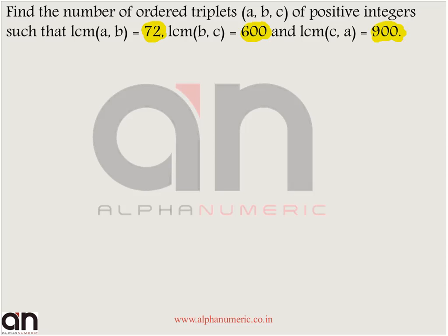How to find the LCM? LCM is all about finding the maximum power. For example, if there are numbers like 12 and 18, I can say 12 is nothing but 2 squared into 3 — that is 4 into 3 — and 18 is 2 into 9, which is 2 into 3 squared.